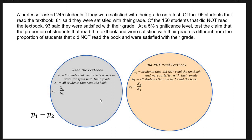Let's take another look at a hypothesis test for the difference between two population proportions. A professor asked 245 students if they were satisfied with their grade on a test. Of the 95 students that read the textbook, 81 said they were satisfied. Of the 150 students that did not read the textbook, 93 said they were satisfied. At a 5% significance level, test the claim that the proportion of students that read the textbook and were satisfied is different from the proportion that did not read the textbook and were satisfied.